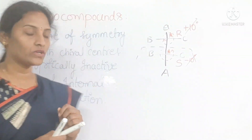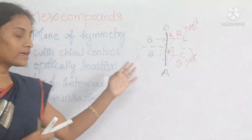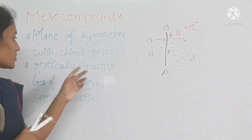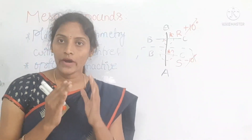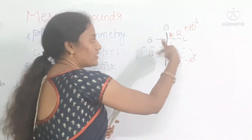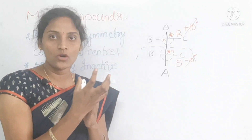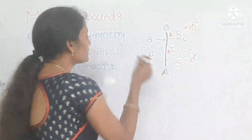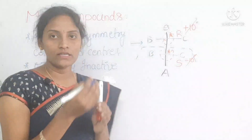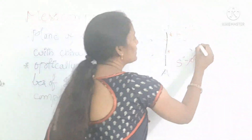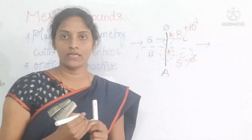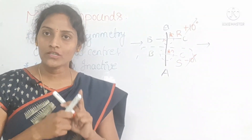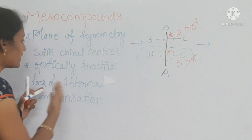Because of this reason only, we call it internal compensation. Because of internal compensation, these compounds are optically inactive. When the rotations cancel out each other, the plane polarized light enters the mixture and comes out exactly as it entered — there is no change. Because of this reason, we say meso compounds are optically inactive compounds.